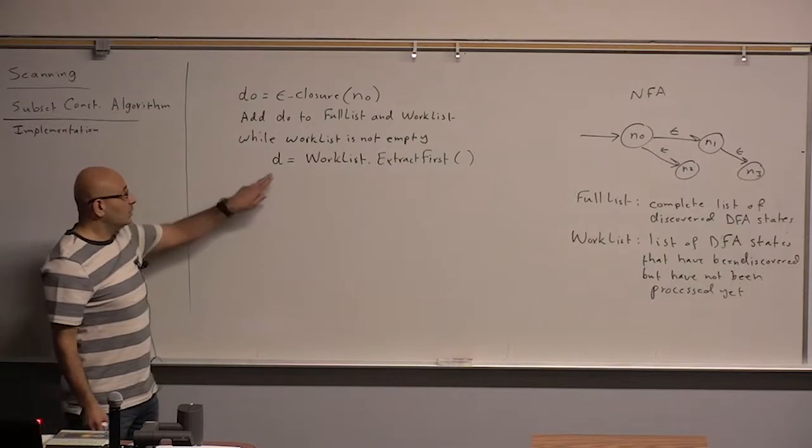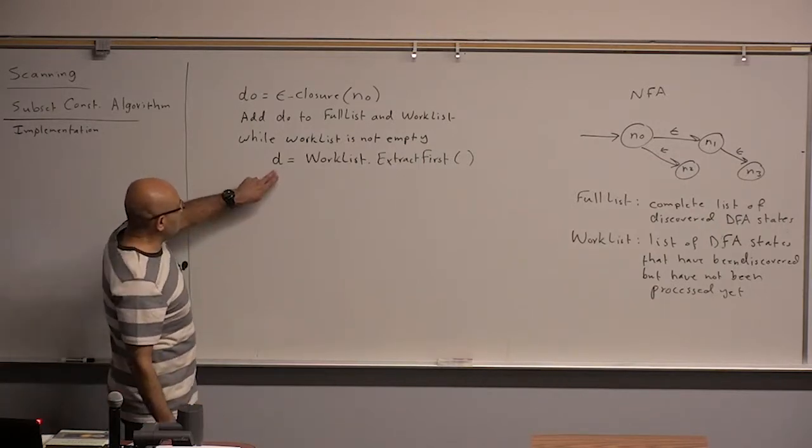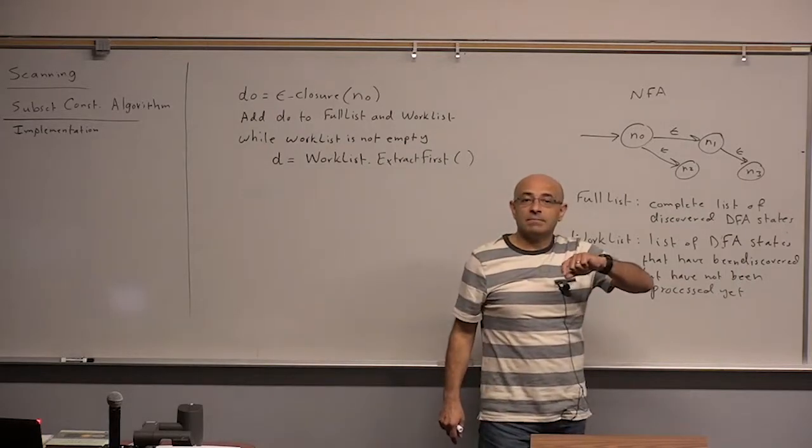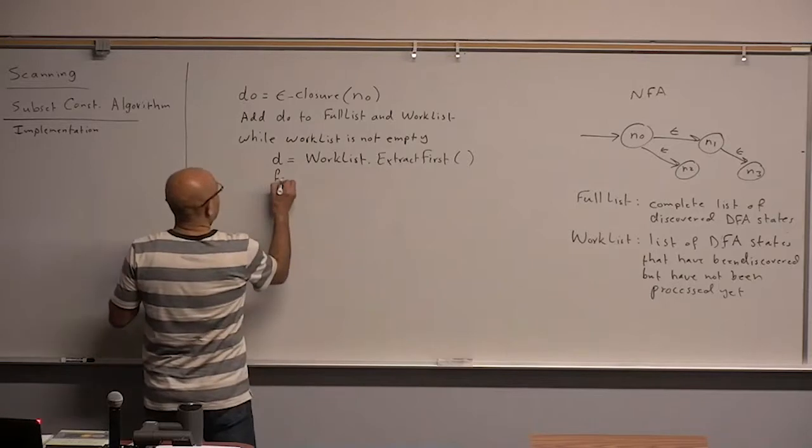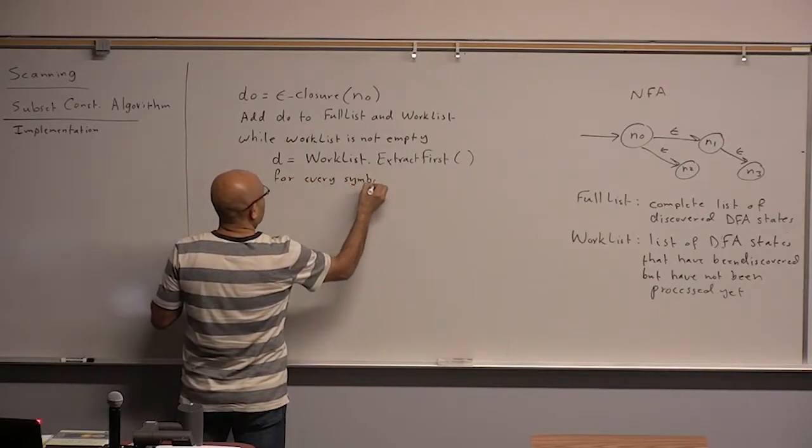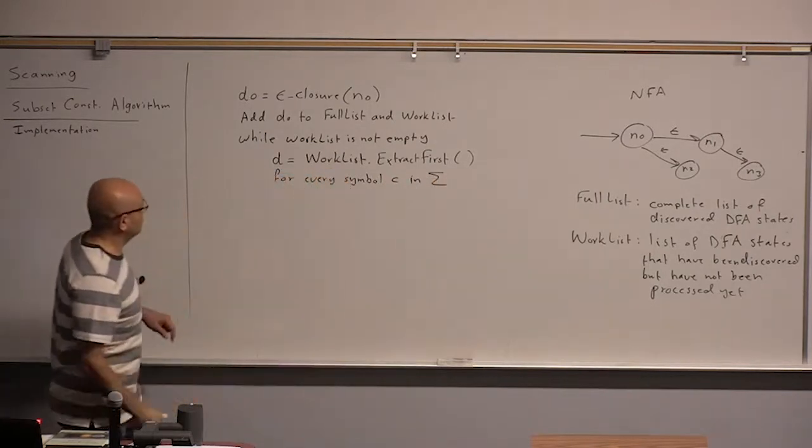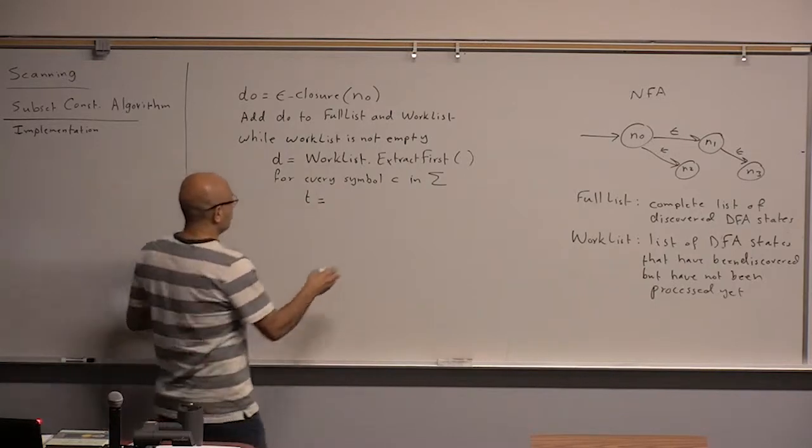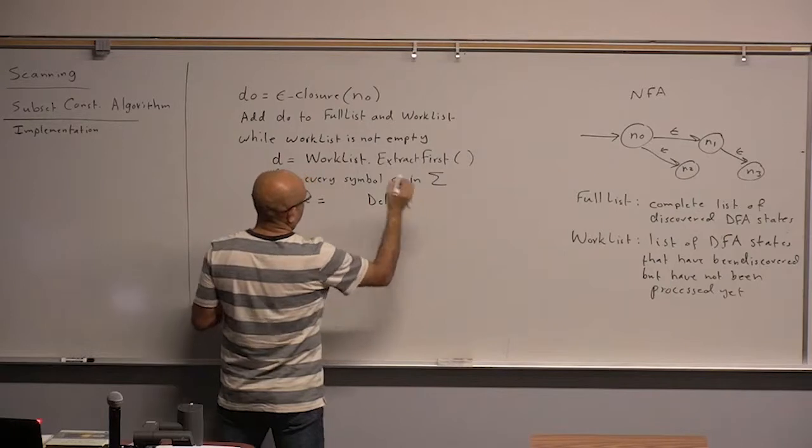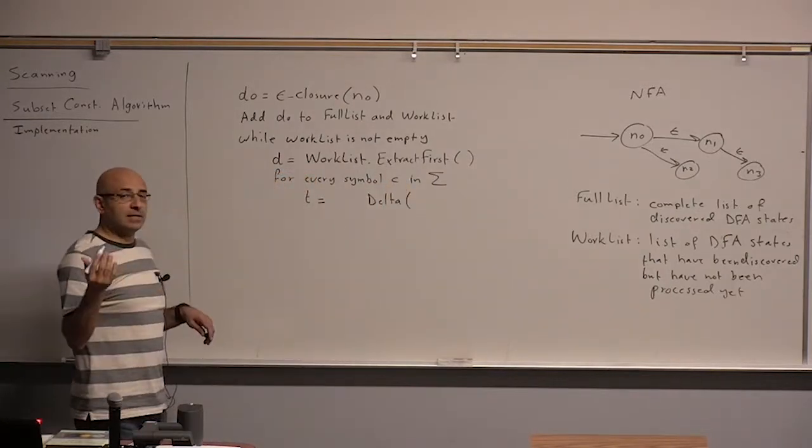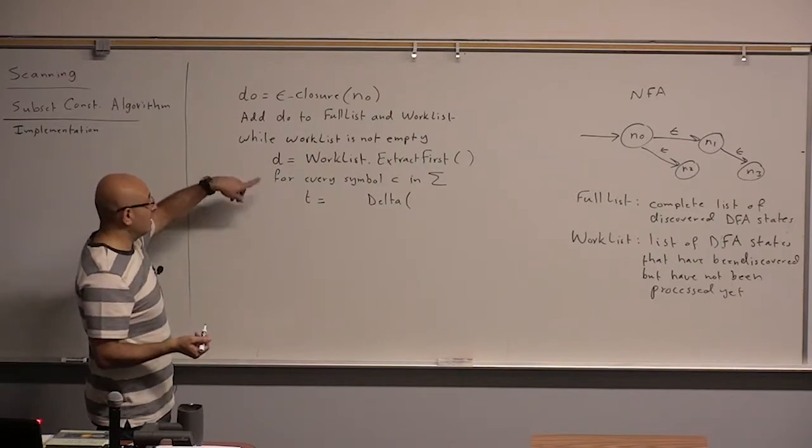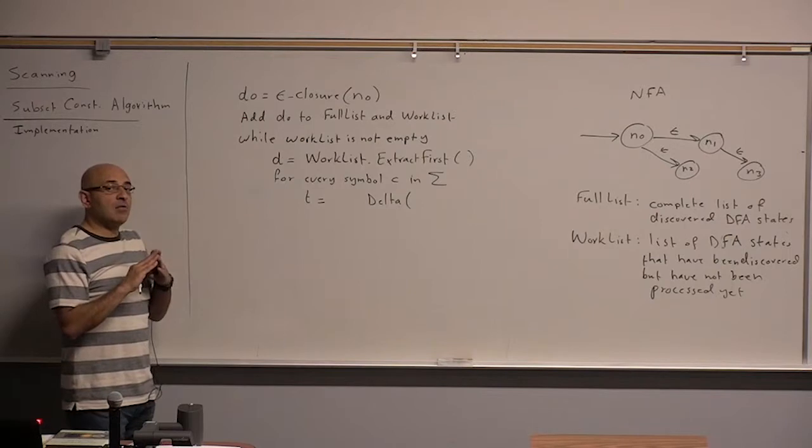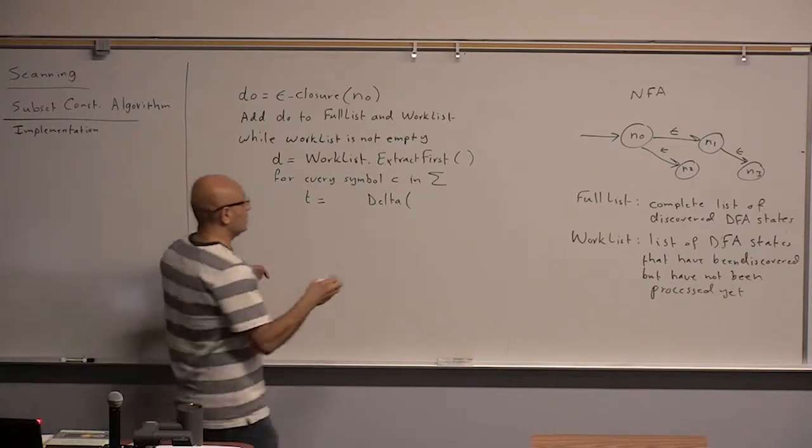And now we would like to process this. So to process this D, we will look at its transitions. And in order to look at its transitions, we will have to go through all possible symbols. Exactly. So for every symbol C in the alphabet, we look at it. We compute T that is equal to delta of, delta is the transition function. So we're looking for delta of what and what? D and C. So delta, the transition function of a finite automaton takes a state and a symbol. So delta of D and C.